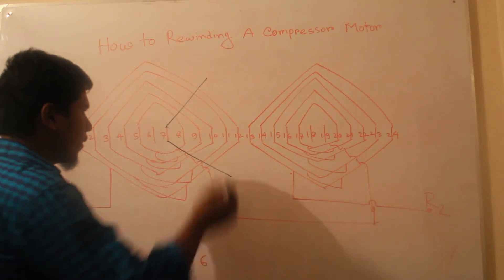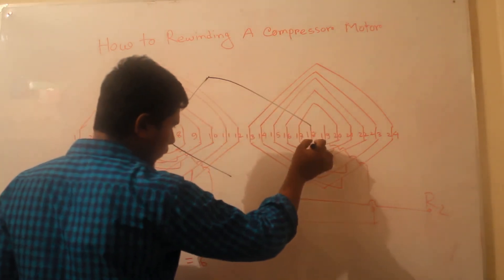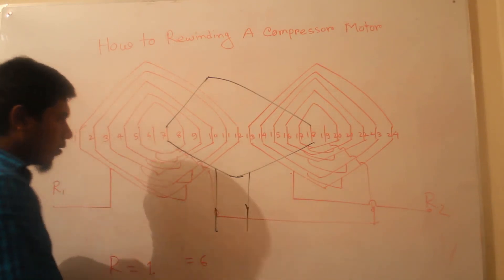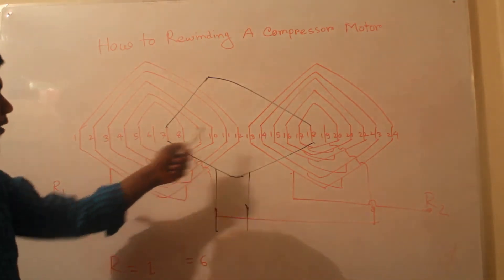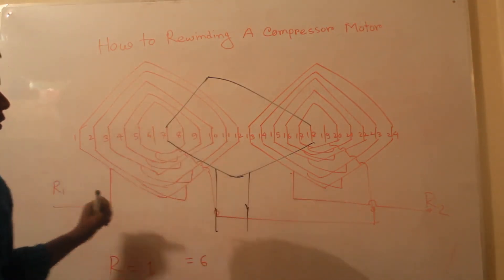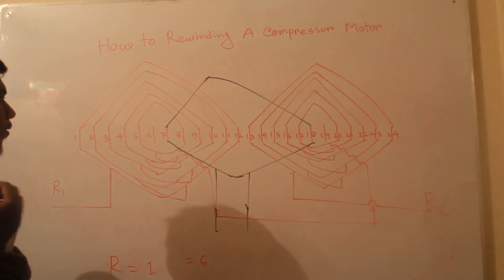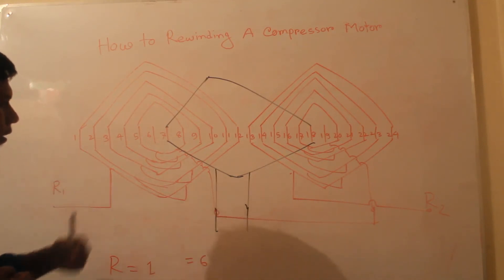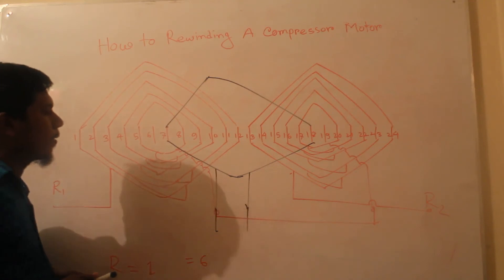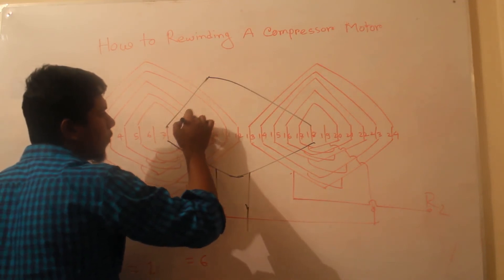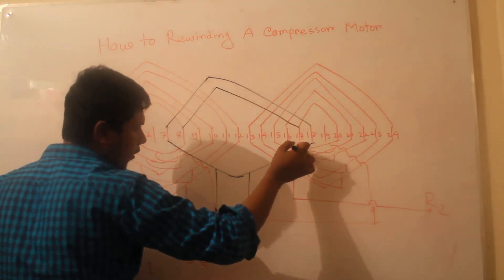Now we draw the starting coil. This starting coil starts at slot 7, and the coil span is the same — 12. There are 18 slots used. You can see that there are 4 blank slots for this starting coil. So these 4 slots make only 2 coils, and each coil makes one full. We make the same coil arrangement as the running coil for this starting coil.